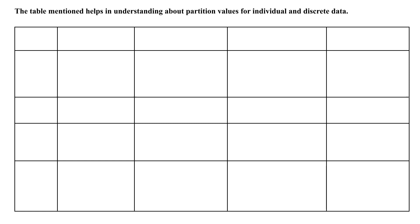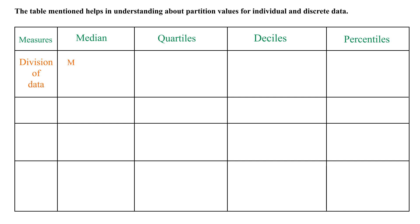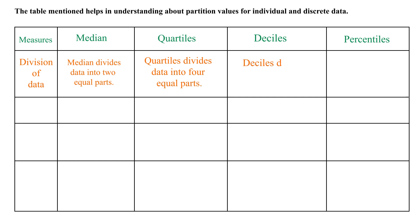The table mentioned helps in understanding partition values for individual and discrete data. Median divides data into two equal parts, quartiles into four equal parts, deciles into ten equal parts, and percentiles into hundred equal parts.